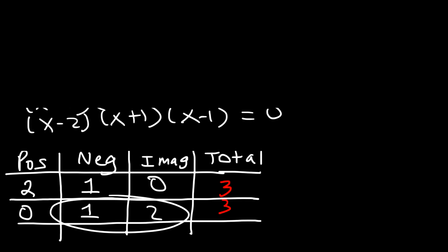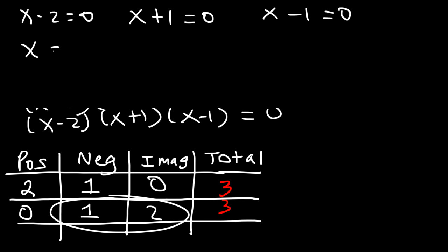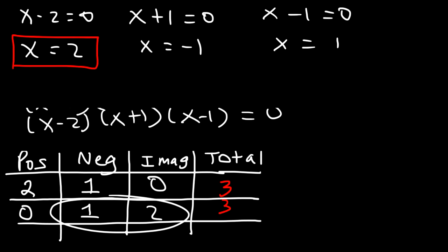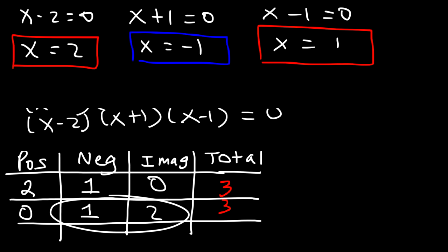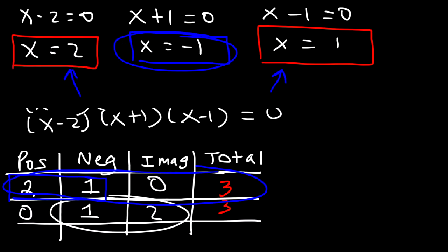Setting all three factors equal to zero: x - 2 = 0, x + 1 = 0, and x - 1 = 0, so x = 2, -1, and 1. The positive real zeros are 2 and 1, and the negative real zero is -1. Therefore, we have two positive real zeros and one negative real zero — the first row of our table is the correct one.